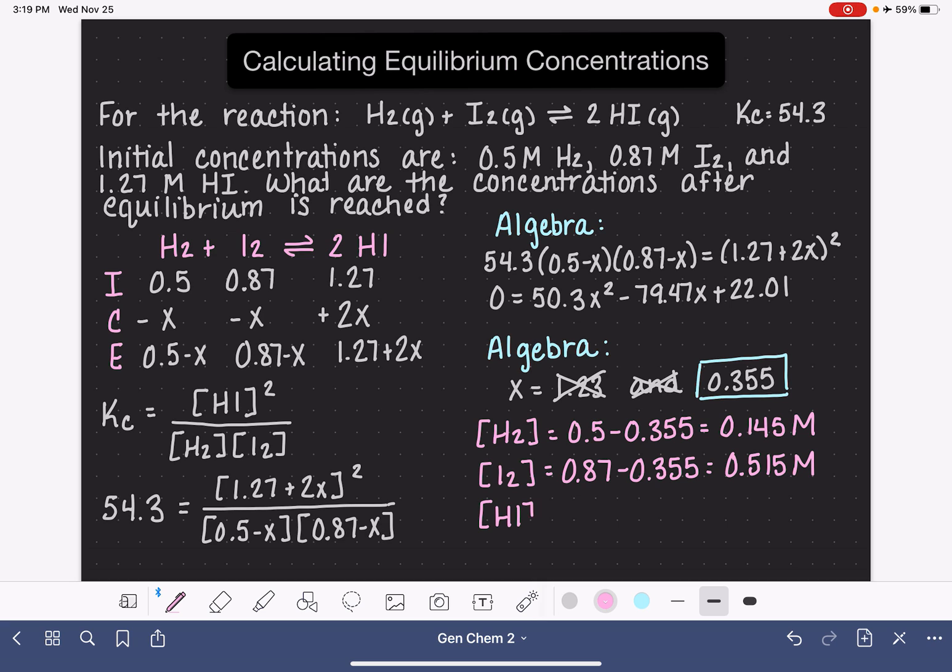For HI, the expression that we came up with was 1.27 plus 2X, 1.27 plus 2 times 0.355. When we do the math on that, it is 1.98 molar. These three concentrations are the answer to the question, what will the concentrations be after equilibrium has been reached?